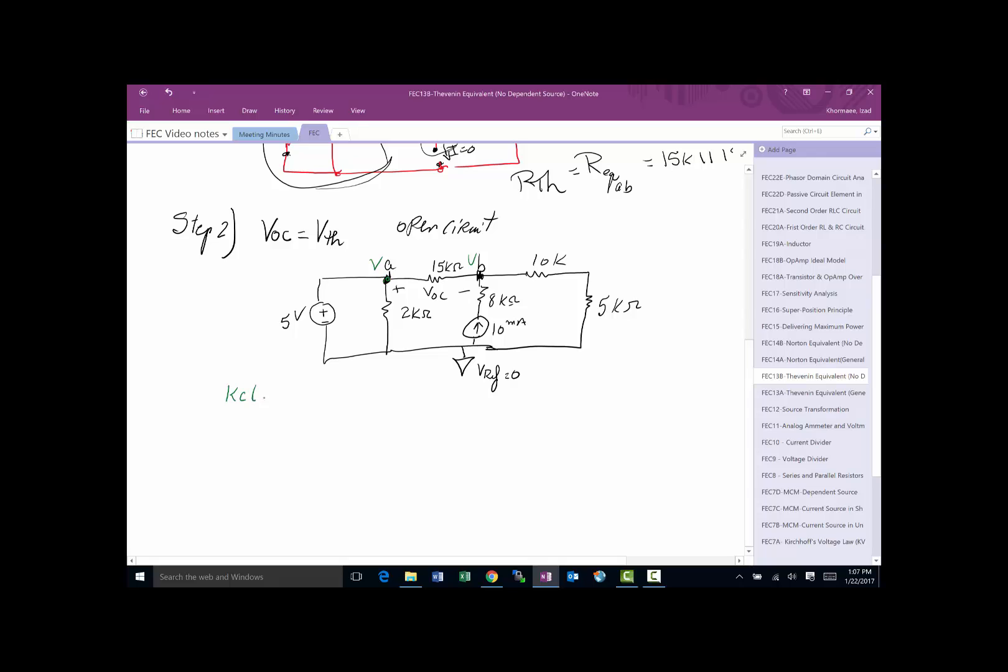Then I go ahead and try to write KCL at VA, but that's really cool because if this is zero, I've got a five volt source. This is one of the special cases on node voltage, which basically tells me I don't have to do anything other than just say VA is equal to five volts, right? If this is zero, then VA has to be five volts because there's only a five volt source between the reference and VA.